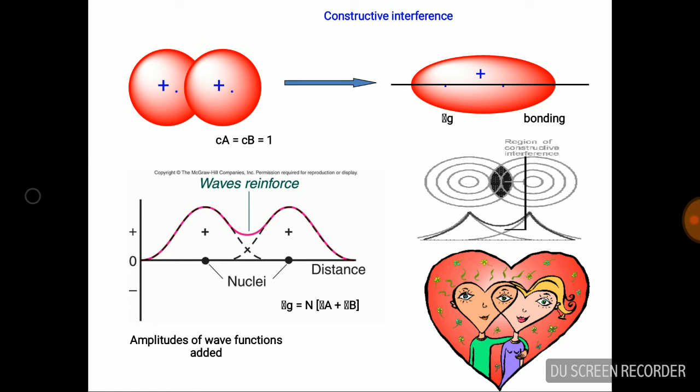When two atomic orbitals having plus-plus lobes overlap, their waves are reinforced due to the increase in electron density between two nuclei. As a result, there will be minimum repulsion between two molecular orbitals and hence a stable bond forms.